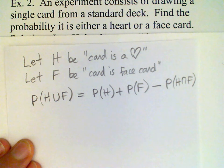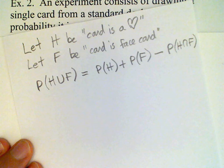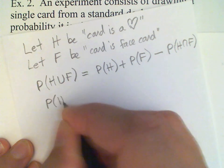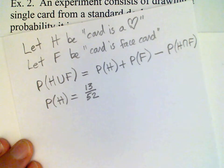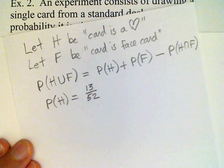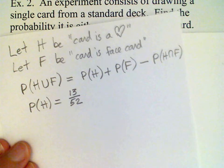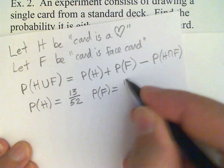So we need to know what these individual probabilities are. How many hearts are there in the deck? Well, there are 13, so the probability of H is 13 out of 52. Now for the face cards — king, queen, or jack — there are three in each suit, and there are four suits, so that's a total of 12. The probability of F then is 12 out of 52.